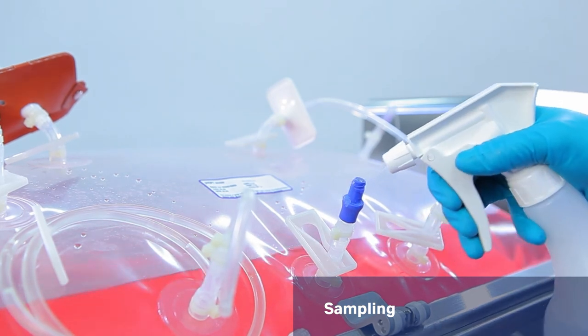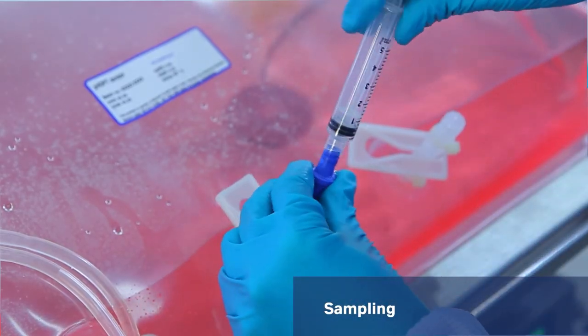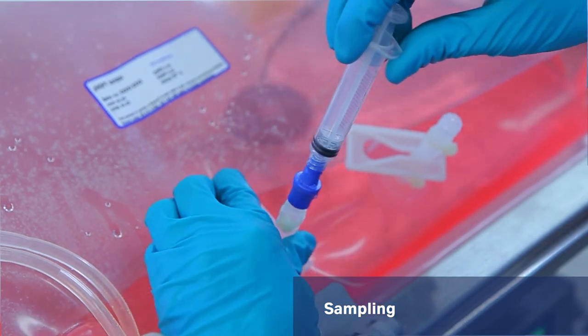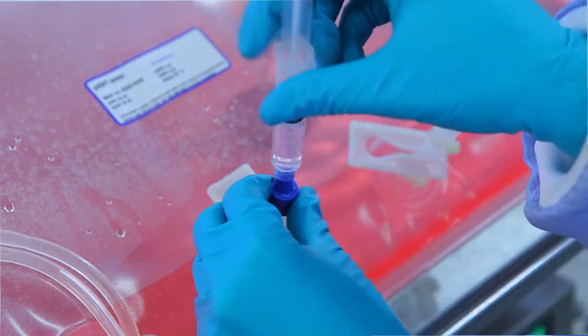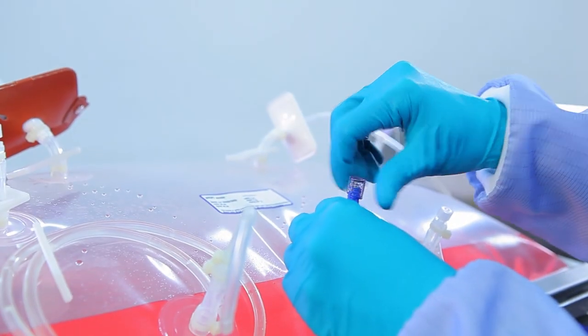When sampling, stop the rocking motion and attach a sterile syringe to the aseptic sampling port using the Luer connector. Take out your sample. Detach the syringe from the port and put the lid back on.